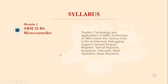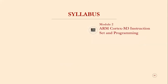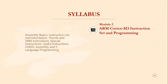Module 2 covers the instruction set and programming of ARM Cortex-M3. Topics include assembly language programming basics, the instruction list and descriptions, Thumb and ARM instructions, special and useful instructions, the concept of CMSIS (Cortex Microcontroller Software Interface Standard), and assembly and C language programming with examples.